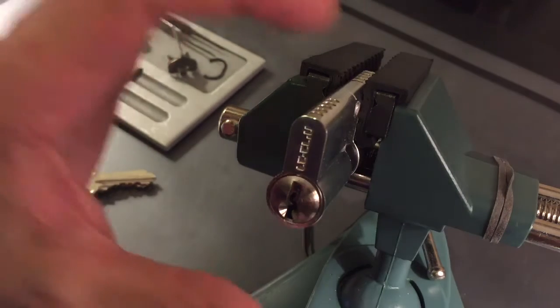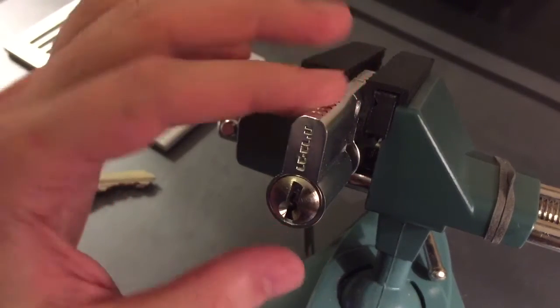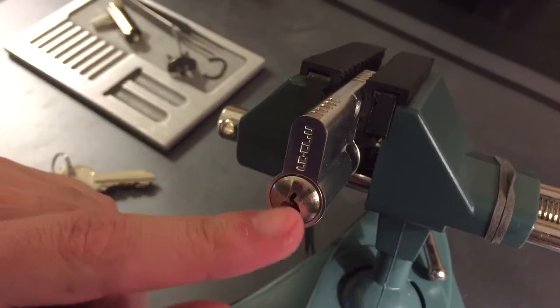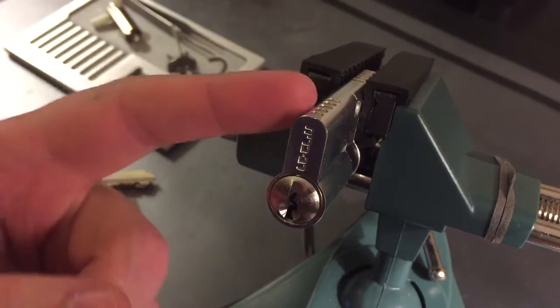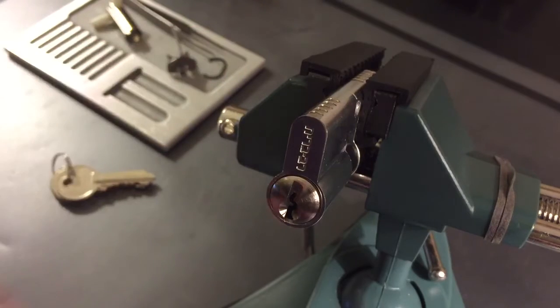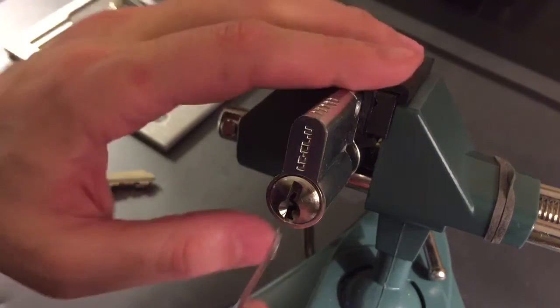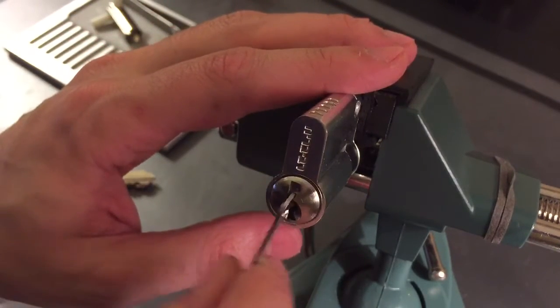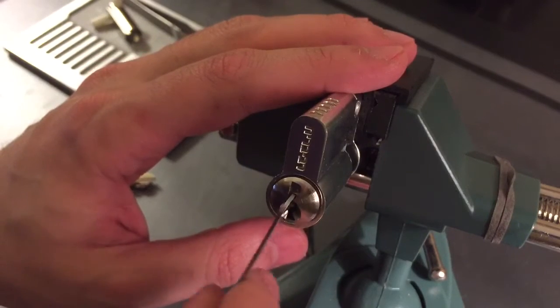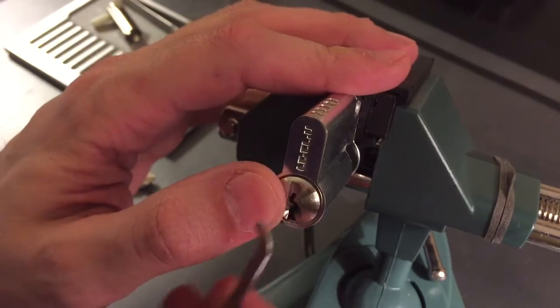This lock features a wonderful aluminum housing, what I suspect is an aluminum core, five pins, some of the worst tolerances you can possibly imagine out of anything called a lock. I mean this whole core just flops around in there.